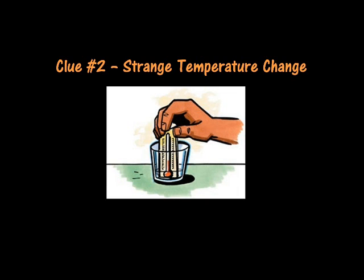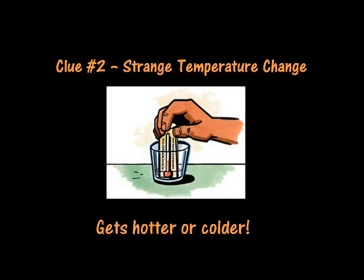The second clue is an unexpected temperature change. If you put water in the freezer, well of course it's going to get cold — that's a physical change. But when you mix sodium bicarbonate, calcium chloride, and water together, the mixture gets very, very cold. This is a sign that a chemical reaction is taking place. If your substance suddenly heats up or cools down without using heat or using the refrigerator, that's a chemical change.